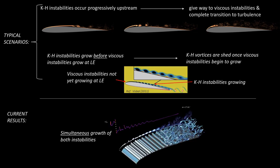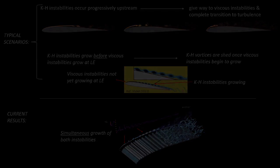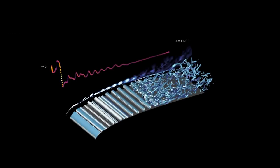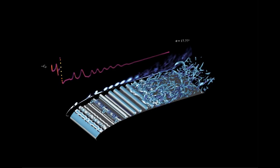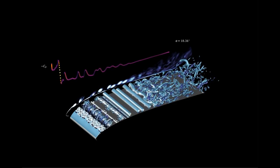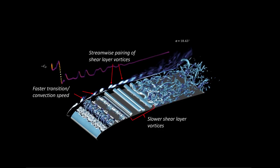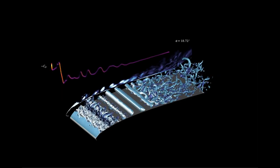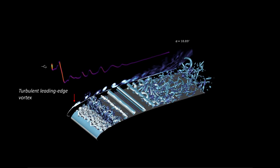In contrast, the current results highlight their simultaneous growth for a specific combination of Reynolds number and pitch rate. The interaction between these two modes and consequent influence on the onset of unsteady stall requires further exploration. The vortices originating from the bubble navigate a region of large adverse pressure gradient and rapidly transition to turbulence, and have a faster convection speed relative to the shear layer vortices. A stable turbulent leading edge vortex develops after flow fully transitions near the leading edge.